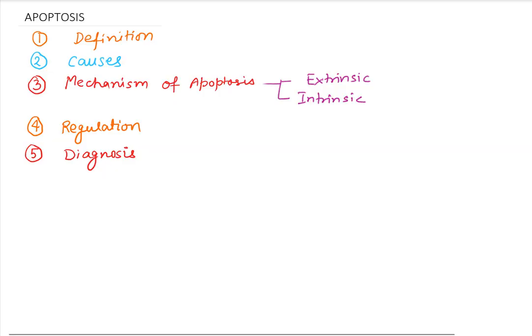Hello friends, welcome to Pathological Concepts. Today we are going to learn about a very important concept about cell death — that is apoptosis. We are going to see the definition, the causes or conditions in which it arises, the mechanism of apoptosis, its pathways — extrinsic and intrinsic — along with the enzymes involved, the regulation, and the diagnosis.